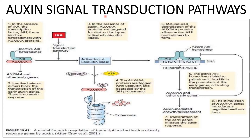Auxin signal transduction pathway. In the absence of auxin, the transcription factor ARF forms an inactive heterodimer with the AUX/IAA protein. The inactive heterodimer blocks the transcription of early auxin genes, resulting in no auxin response. In the presence of auxin, AUX/IAA proteins are targeted for destruction by an activated ubiquitin ligase. AUX/IAA proteins are tagged with ubiquitin and degraded by the 26S proteasome.